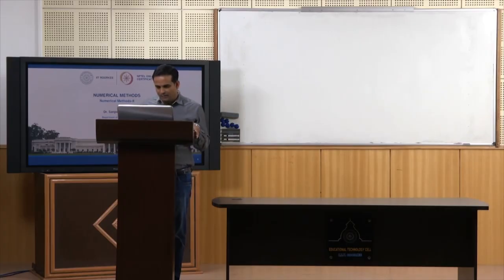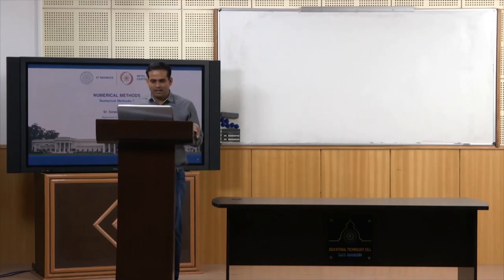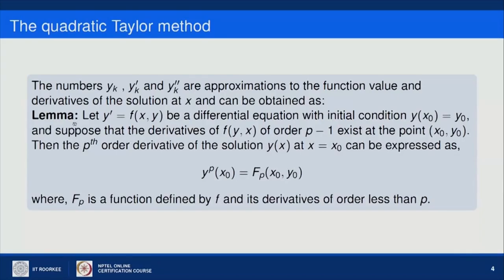In this expression we have y'_k as well as y''_k. The value y'_k is given directly by the differential equation from our initial value problem. However, we need to calculate y''_k separately. For this we use a lemma: if y' = f(x,y) with initial condition y(x₀) = y₀, and the derivative of f of order p−1 exists at (x₀, y₀), then the p-th order derivative of the solution y(x) at x = x₀ can be expressed in terms of F_p(x₀, y₀), where F_p is defined by f and its derivatives of order less than p.